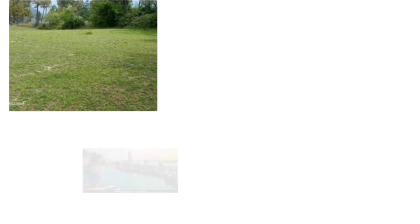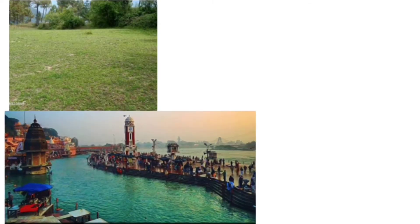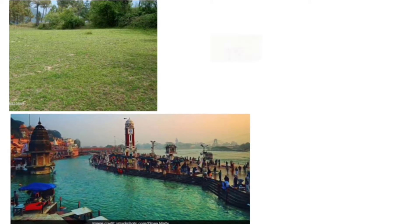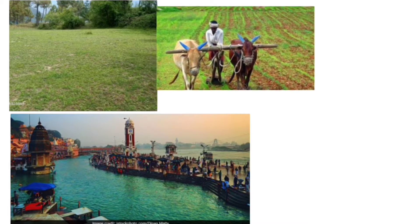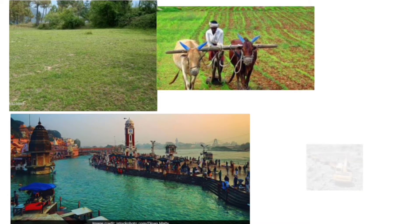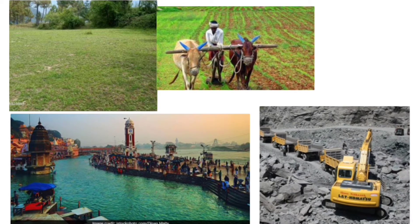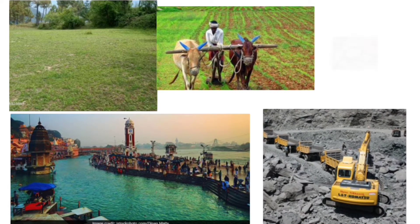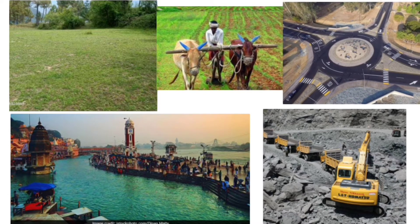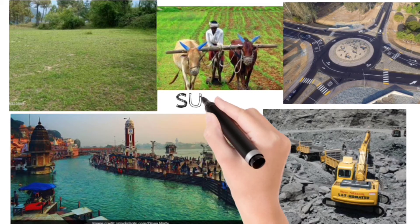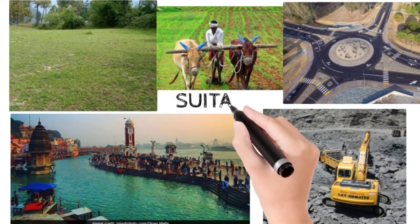Now it's time to know the factors suitable for developing a settlement. Settlements generally develop on level land where construction is possible, and on fertile areas where cultivation is possible. Settlements generally grow near the source of water, since water is the most essential for life. Settlements also develop near a mine or quarry where the main occupation of people is quarrying or mining, and sometimes they are well connected with the main road to facilitate trade and growth.